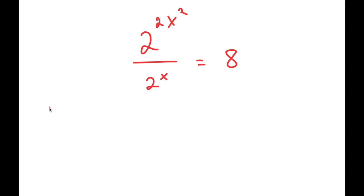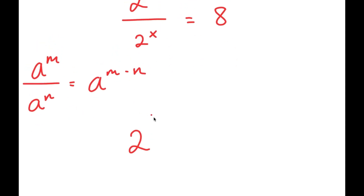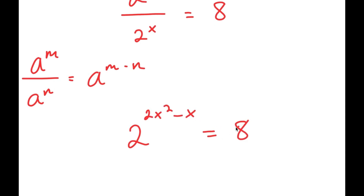Now if I have something in the form a to the power of m over a to the power of n, this is equal to a to the power of m minus n. So 2 to the power of 2x squared over 2 to the power of x equals 2 to the power of 2x squared minus x, and this is equal to 8.